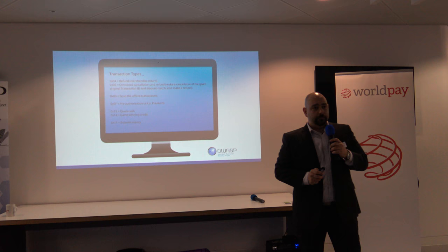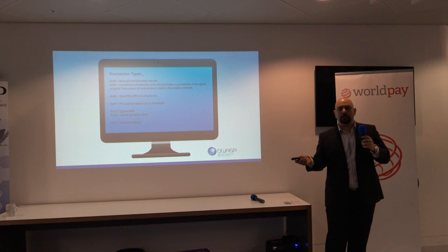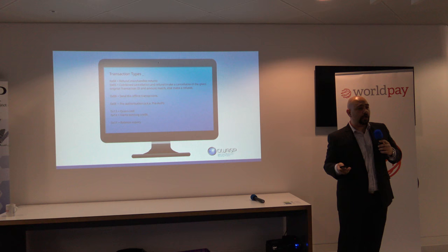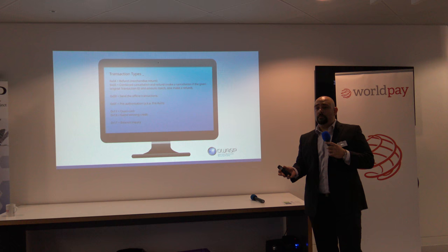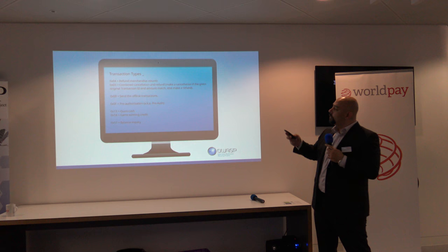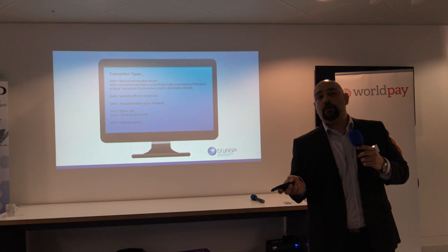Another interesting aspect is transaction types. When you buy something it's usually transaction type zero-zero. When you get a refund it's zero-four. There's also pre-authorization, which is when you go to a hotel and they ask for your credit card — they swipe it, verify you can afford the room, but haven't charged you anything yet, and the charge happens when you check out. There's also balance inquiry, where technically you could find a card and check what the balance is in the account connected to it.